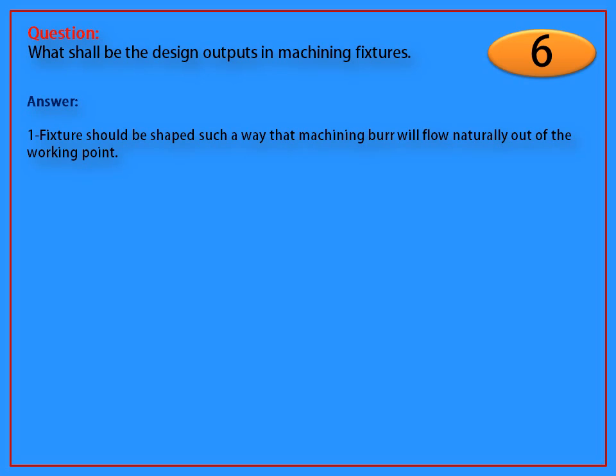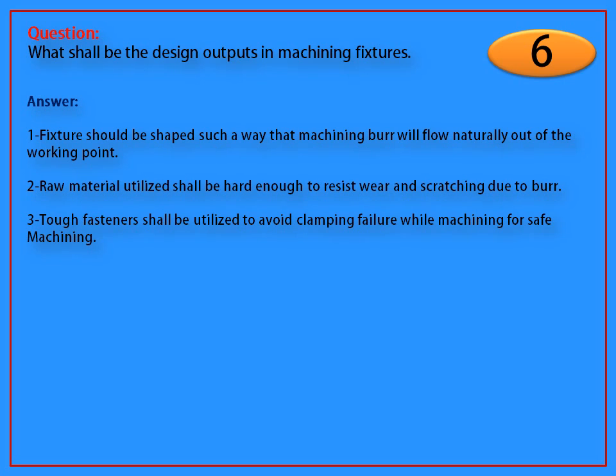Answer: Fixture should be shaped such a way that machining burr will flow naturally out of the working point. Raw material utilized shall be hard enough to resist wear and scratching due to burr. Tough fasteners shall be utilized to avoid clamping failure while machining for safe machining.